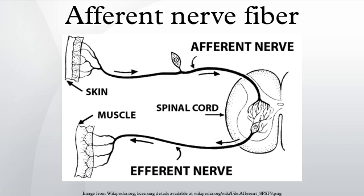A touch or painful stimulus, for example, creates a sensation in the brain only after information about the stimulus travels there via afferent nerve pathways.